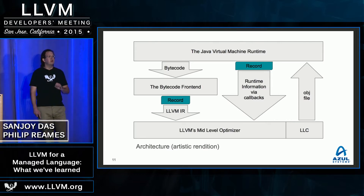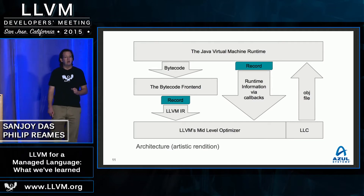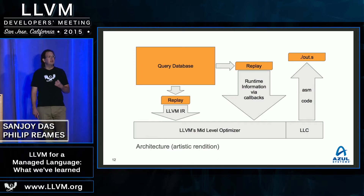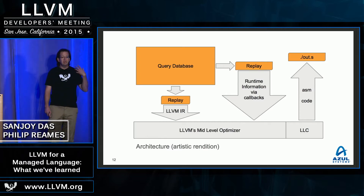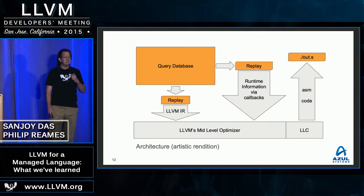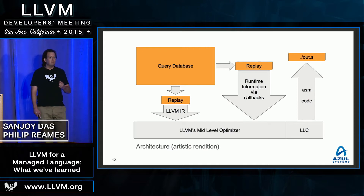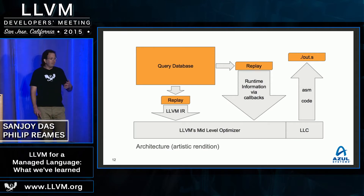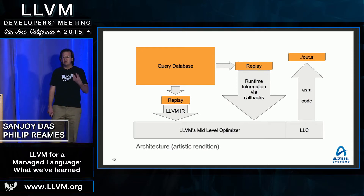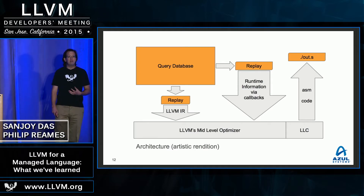The important part is that by capturing that initial IR and that database of facts, we are able to completely replay the entire compile outside of the VM and produce essentially the exact same assembly at the end. For those used to working on Clang, this may not seem like a big deal — but in the space of managed languages, this is a huge enabler. The typical workflow is that a compile happens half an hour into a run, because it's a JIT. To reproduce that compile, you have to wait half an hour. With us, we save the IR the first time it happened, and we can reproduce it instantly and iterate without having to rerun the VM itself.